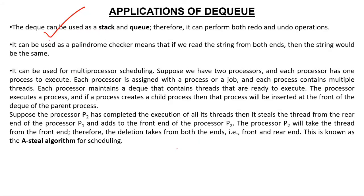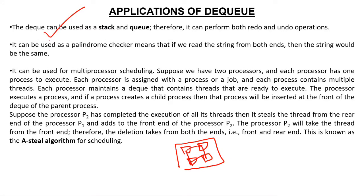The third application is in multiprocessor systems. A multiprocessor is a system with more than one processor — for example, dual core has two processors on a single chip, and quad core has four processors. These processors distribute jobs and threads among themselves. The threads created by a process get executed using a double ended queue. I'll ask you to read the theory on this so you can understand fully, as this also relates to operating system concepts.